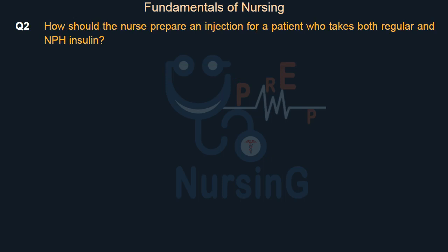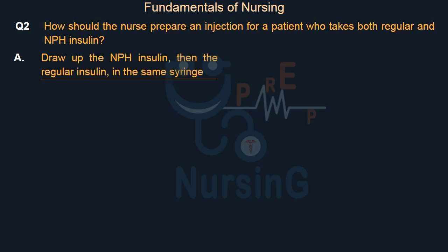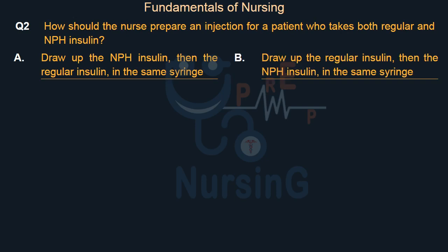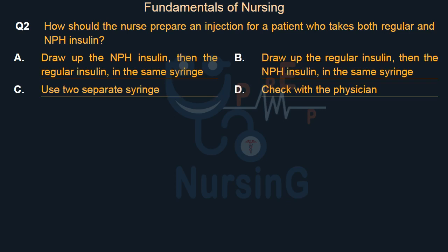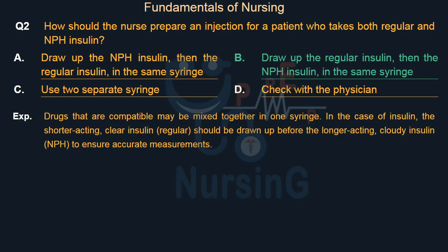How should the nurse prepare an injection for a patient who takes both regular and NPH insulin? Option A: Draw up the NPH insulin, then the regular insulin in the same syringe. Option B: Draw up the regular insulin, then the NPH insulin in the same syringe. Option C: Use two separate syringes. Option D: Check with the physician. The right answer is Option B: draw up the regular insulin, then the NPH insulin in the same syringe.